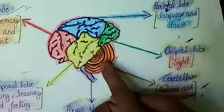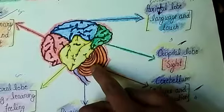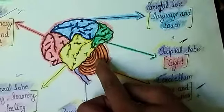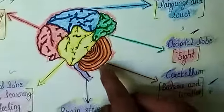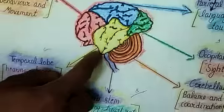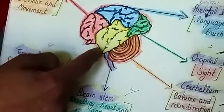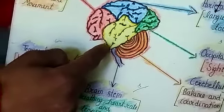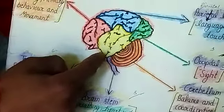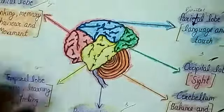The fourth part of the brain is the cerebellum. It controls coordination and balance of the body. The fifth part of the brain is called the temporal lobe. Hearing, breathing, and feeling are controlled by the temporal lobe.